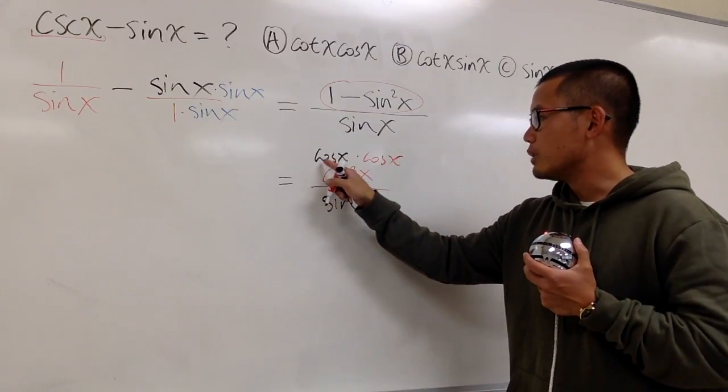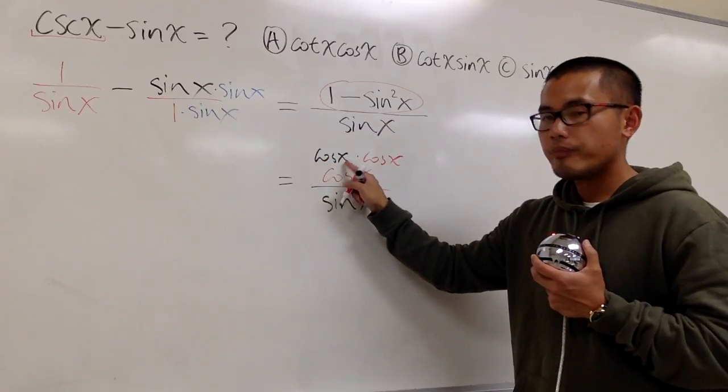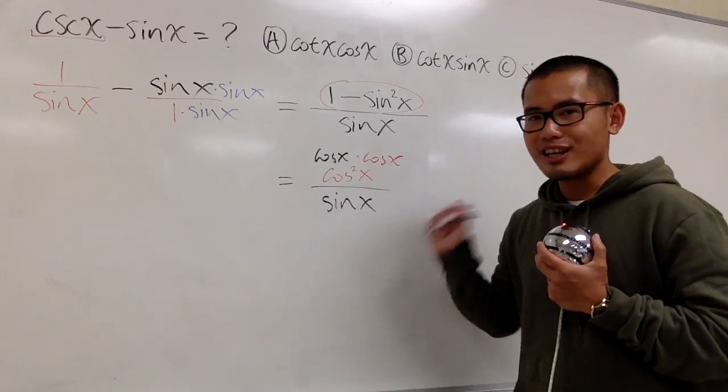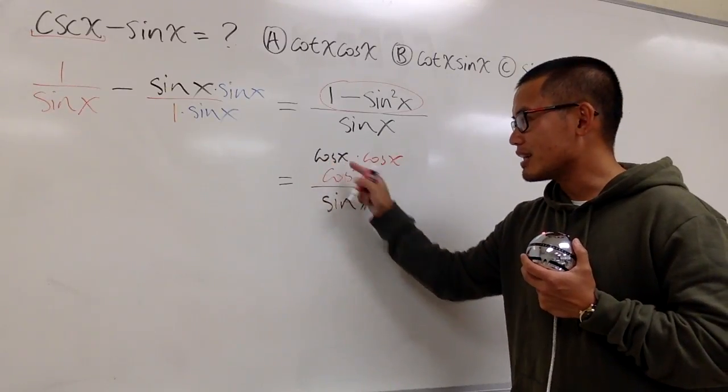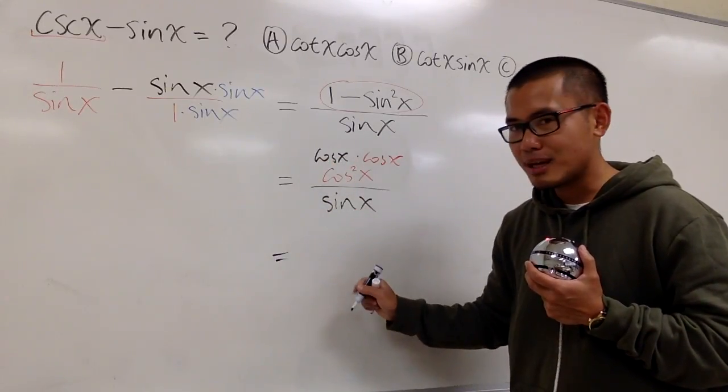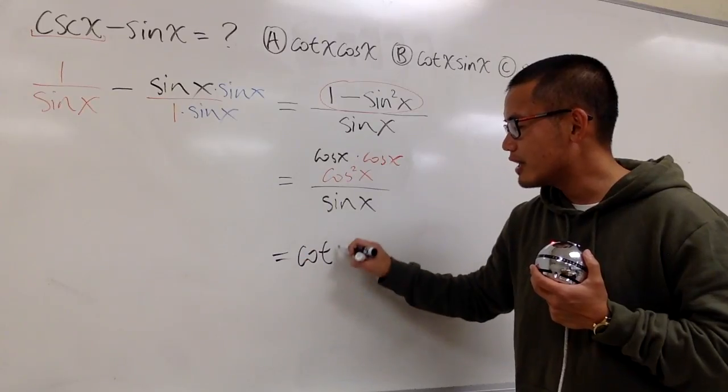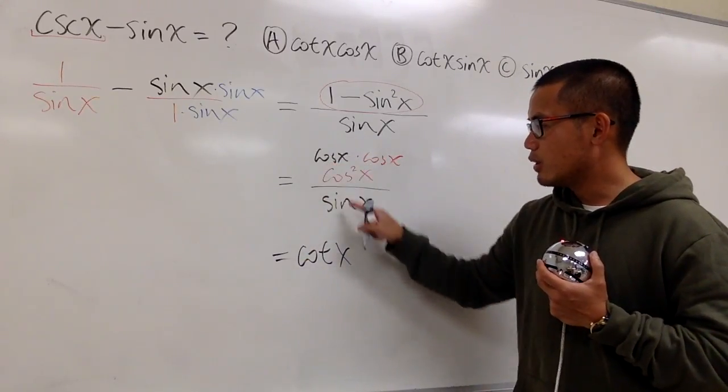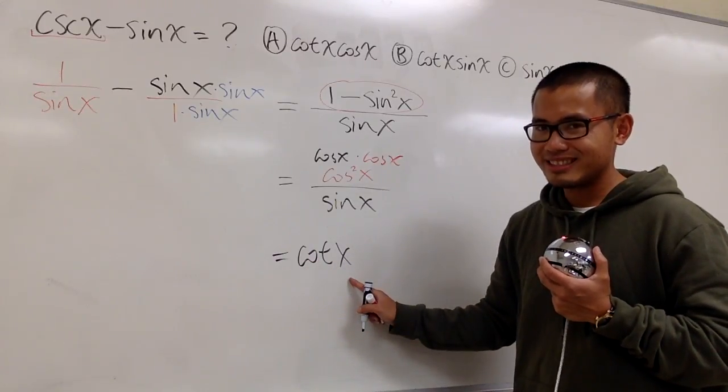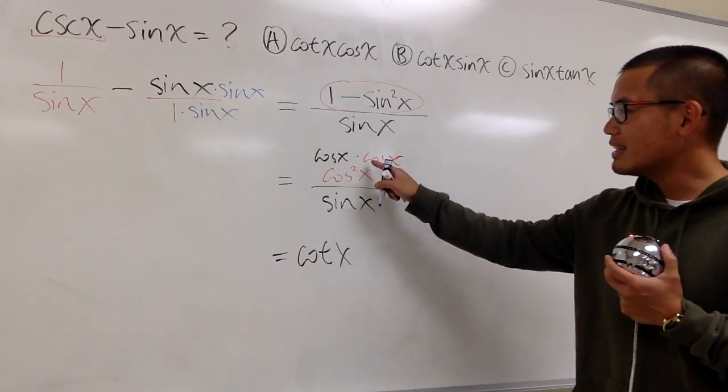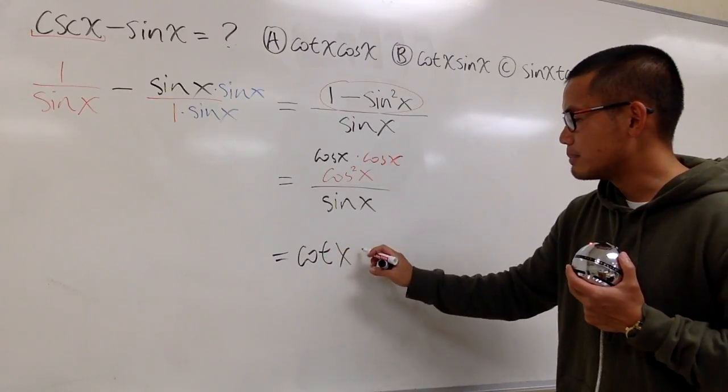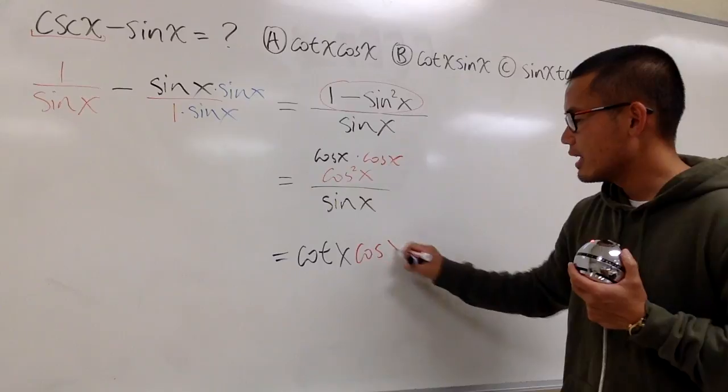And now you look at we have a cosine x right here over this sine x. What's cosine x over sine x? Cosine x over sine x is the same as cotangent x. So the black part right here, this over that is cotangent x. And we still have another cosine x that's multiplying on the top. So we just need to multiply this by cosine x.